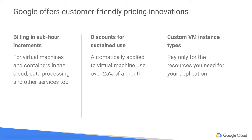Compute Engine offers automatically applied sustained use discounts, which are automatic discounts that you get for running a virtual machine for a significant portion of the billing month. When you run an instance for more than 25% of a month, Compute Engine automatically gives you a discount for every incremental minute you use it.